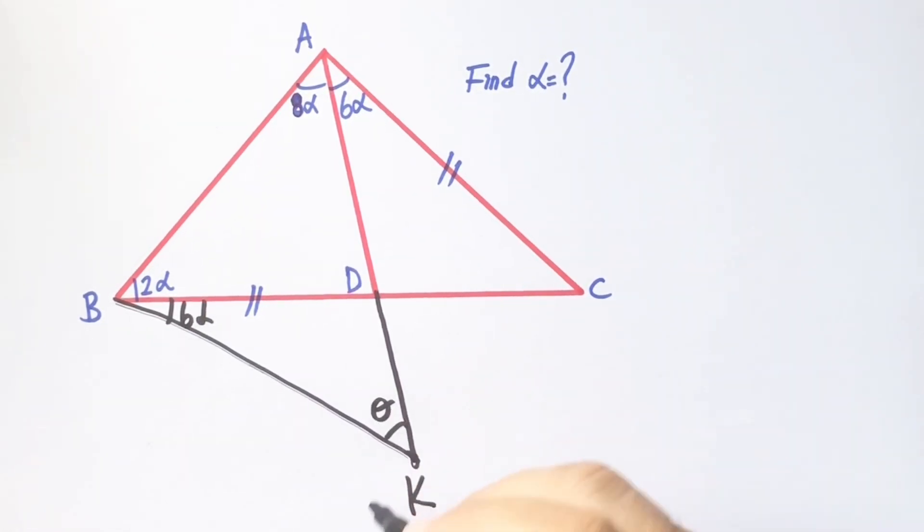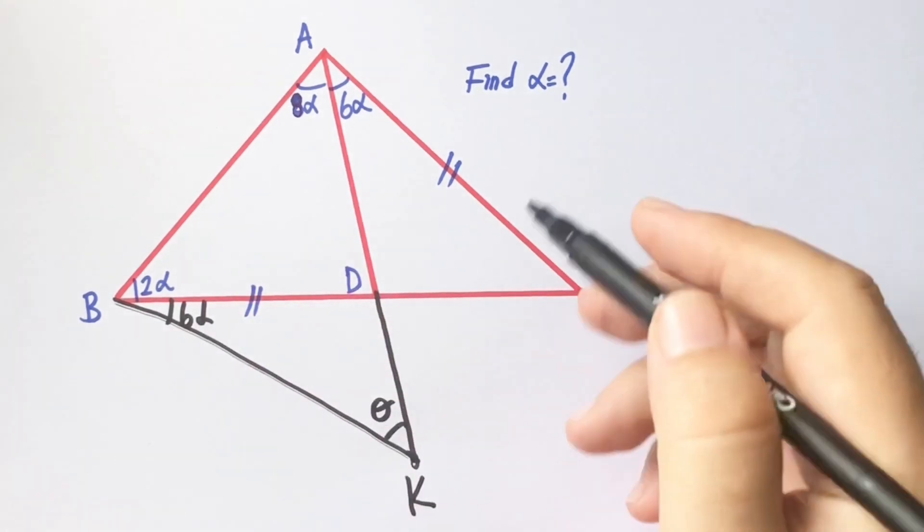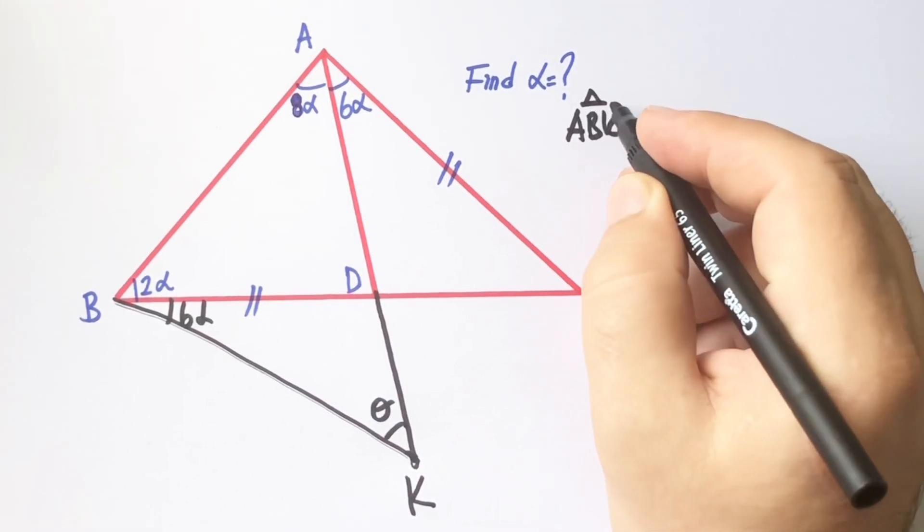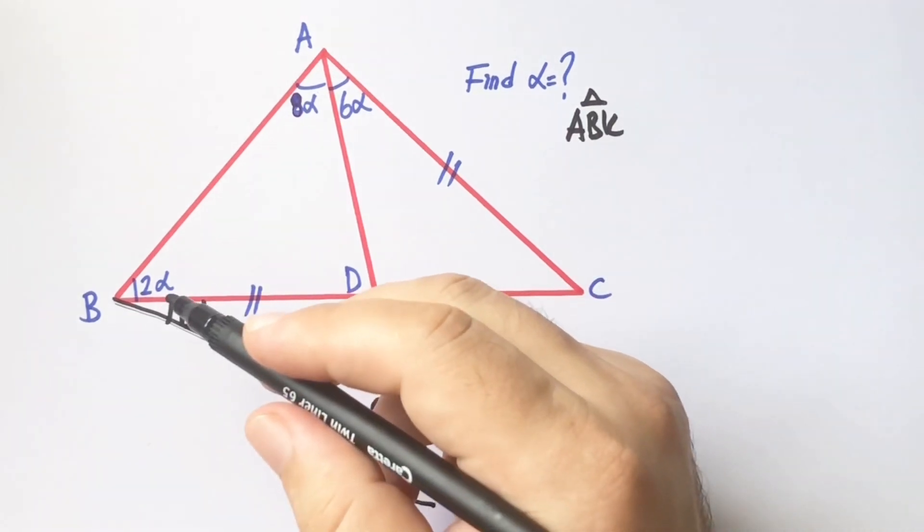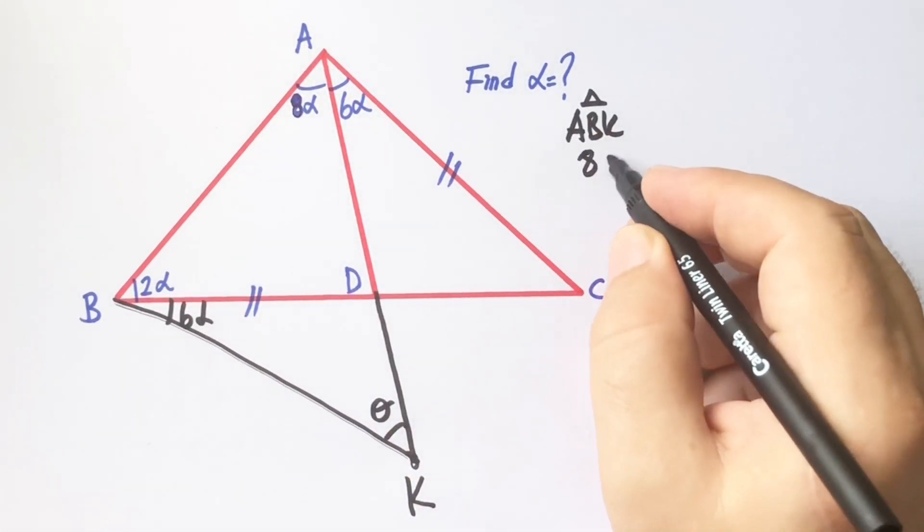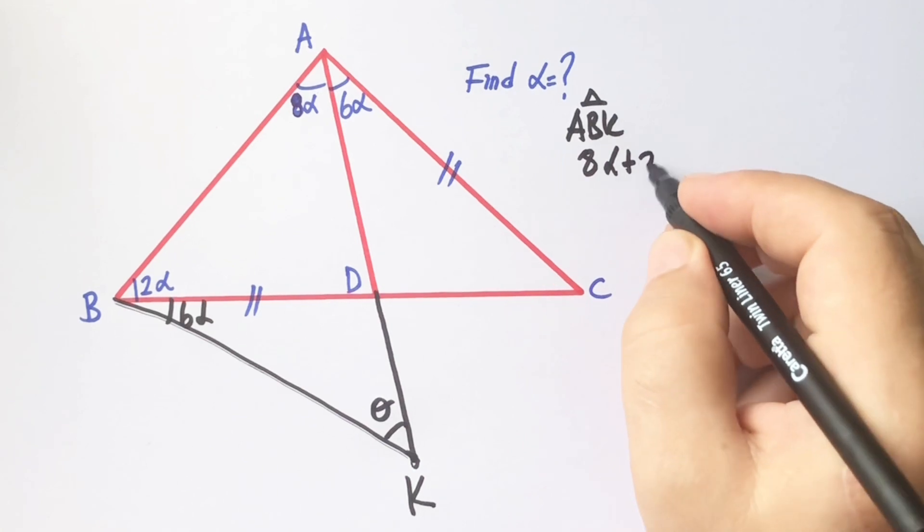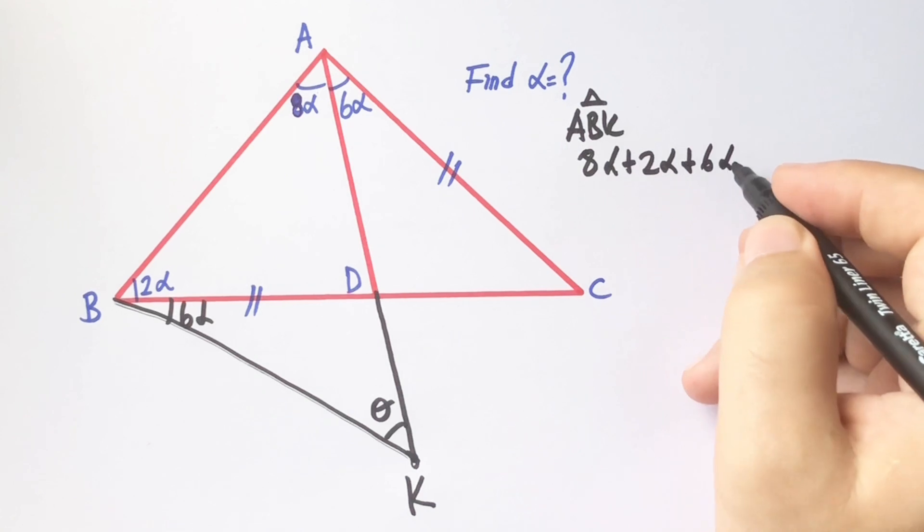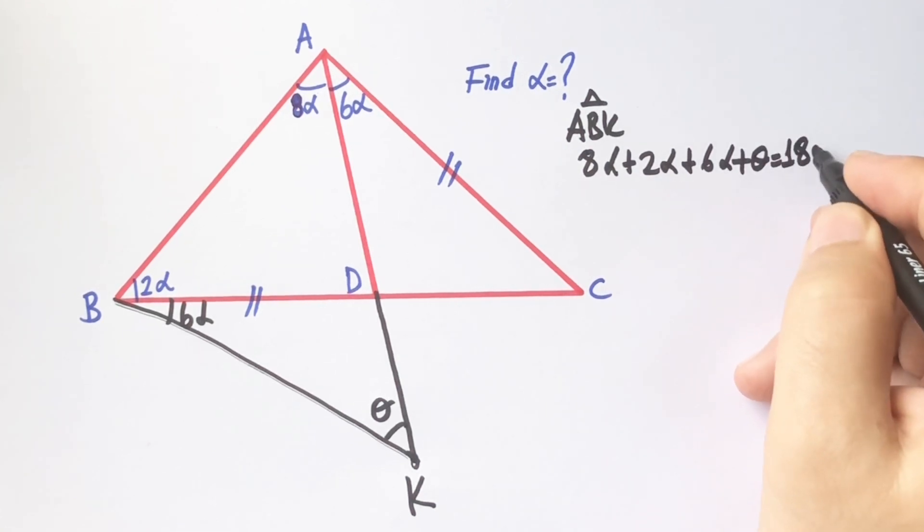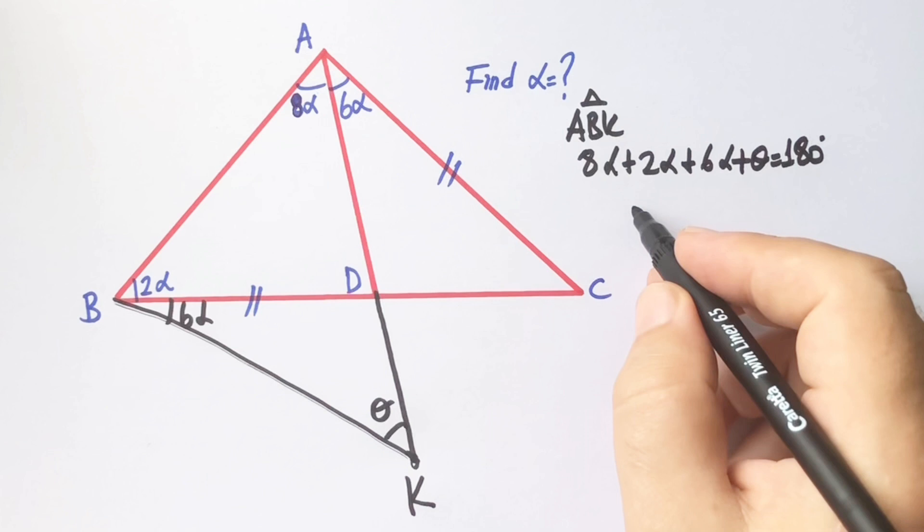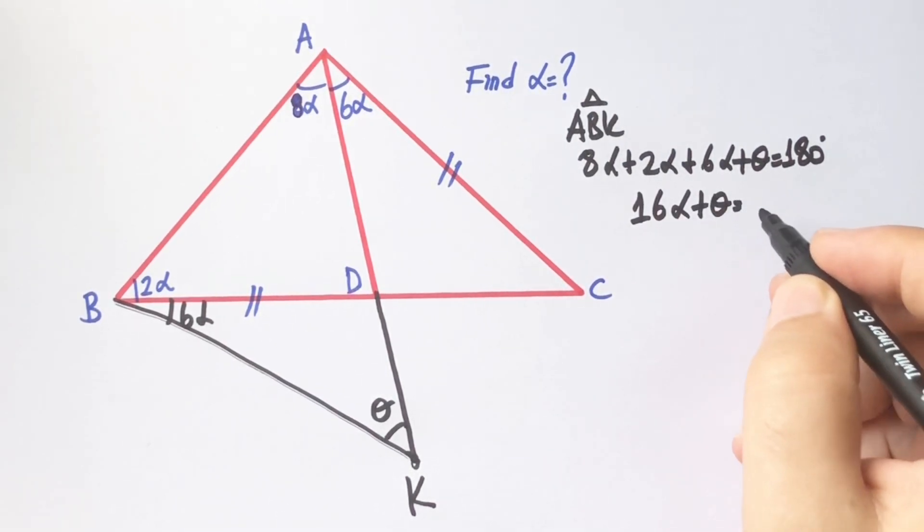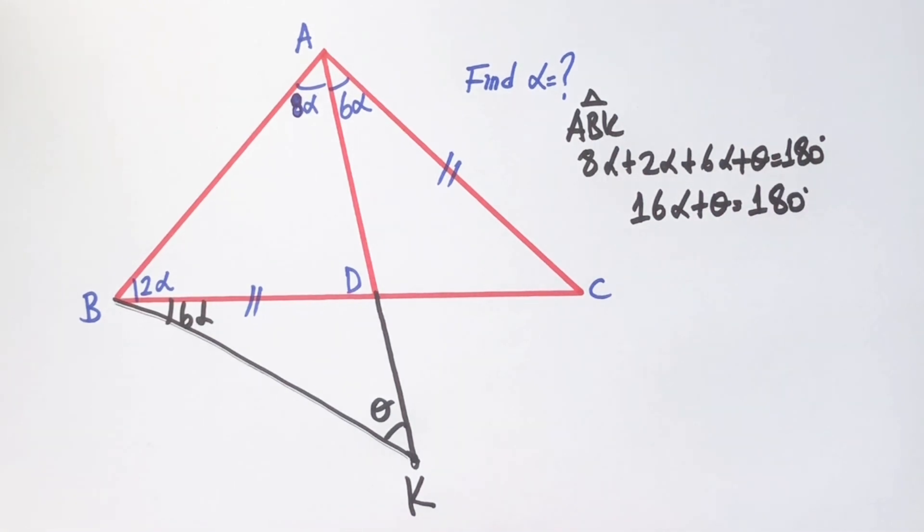I am going to call here θ. In triangle ABK, 8α plus 2α plus 6α plus θ equals 180 degrees, right? So 16α plus θ equals 180 degrees.